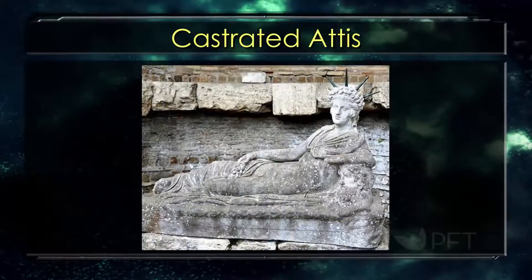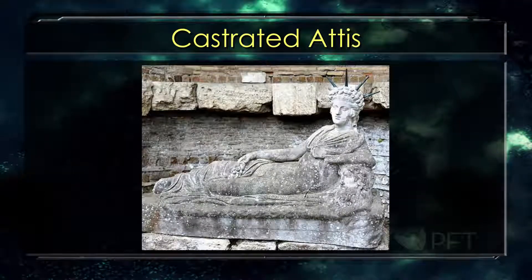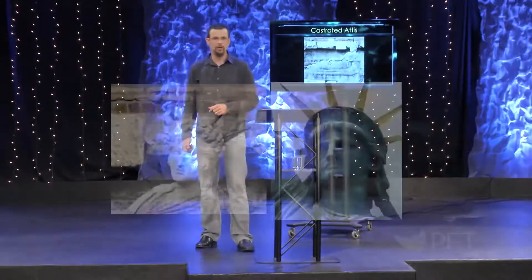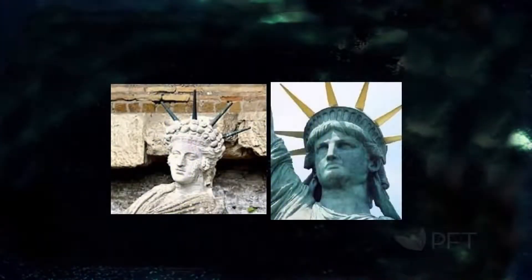This is Attis. Attis is somebody you need to understand — he was the priest or the main servant of Cybele, or Ishtar, the wife of Baal, the sun god. And in their rituals, he castrated himself, then would dress up — cross-dress as a woman — and wear this hat. This is a close-up of the castrated Attis on the left and Lady Liberty on the right.